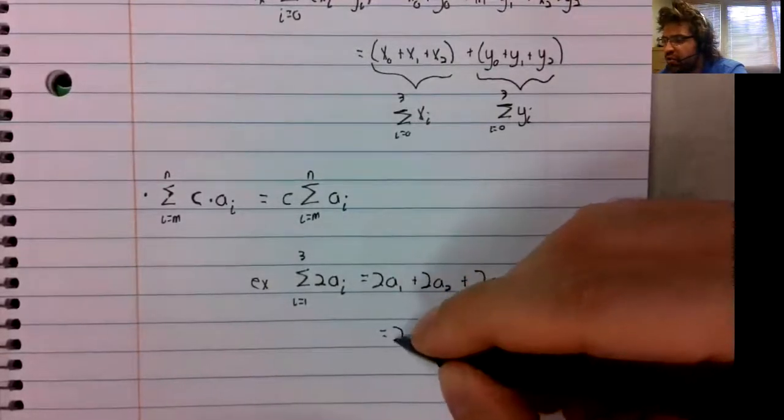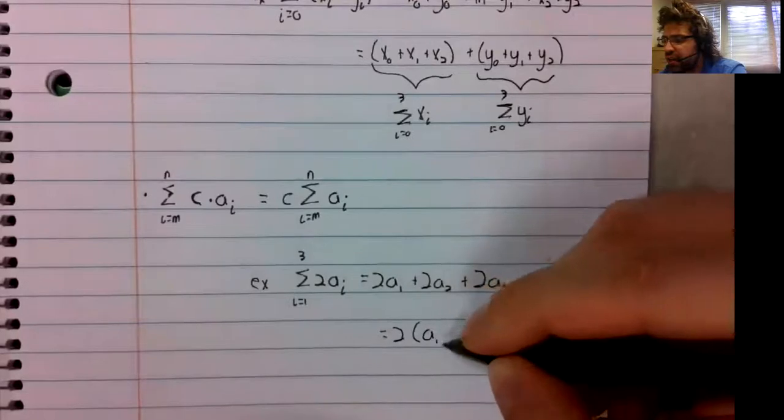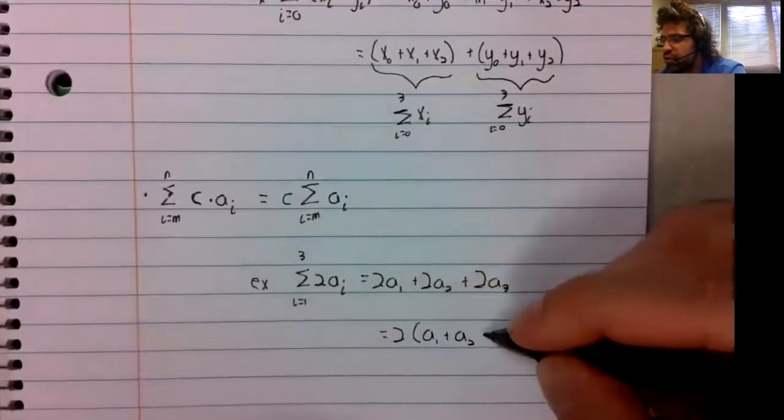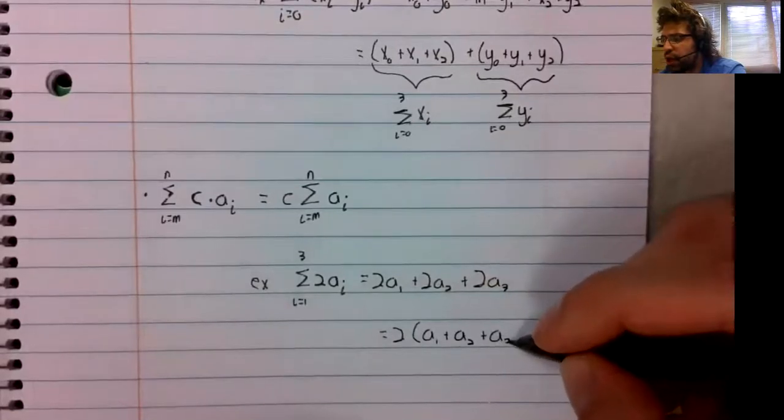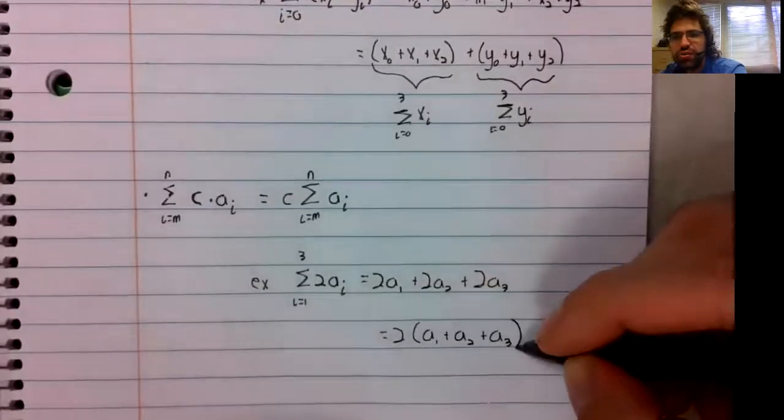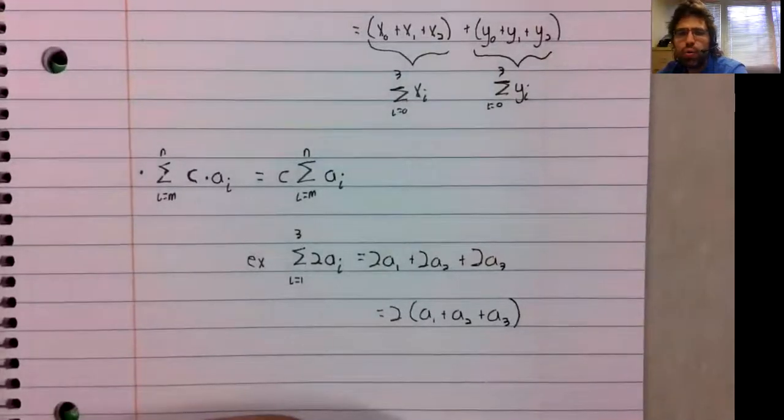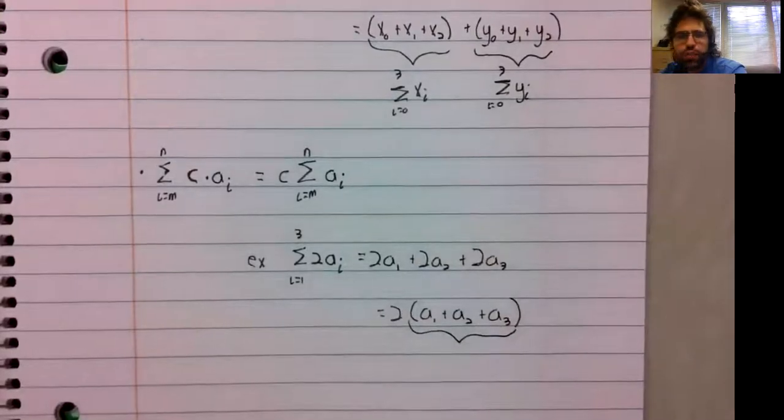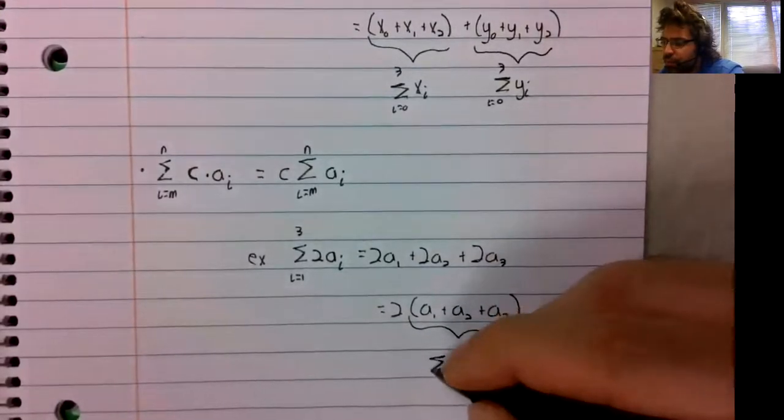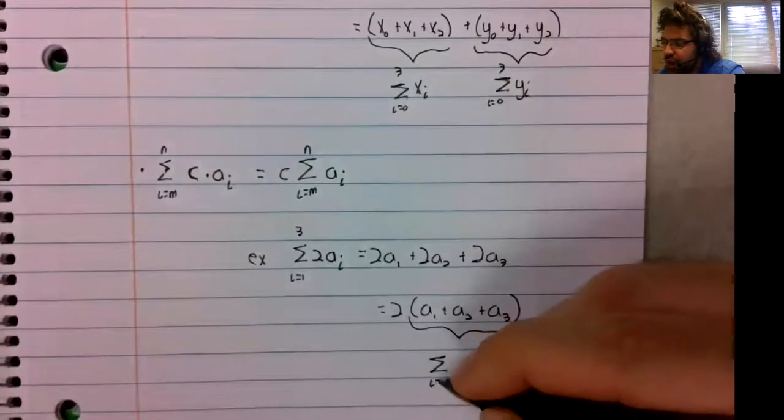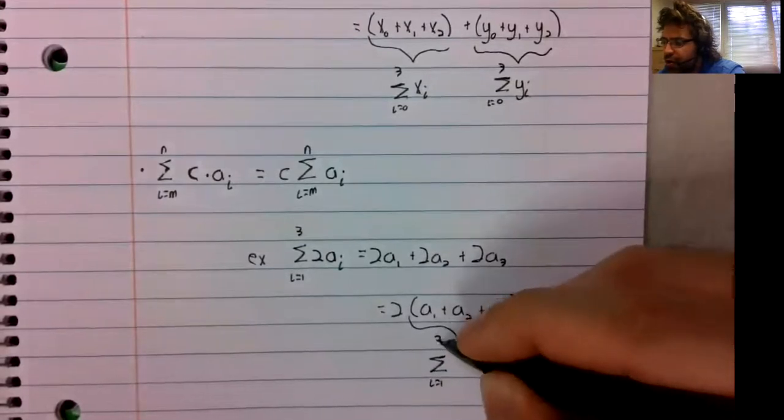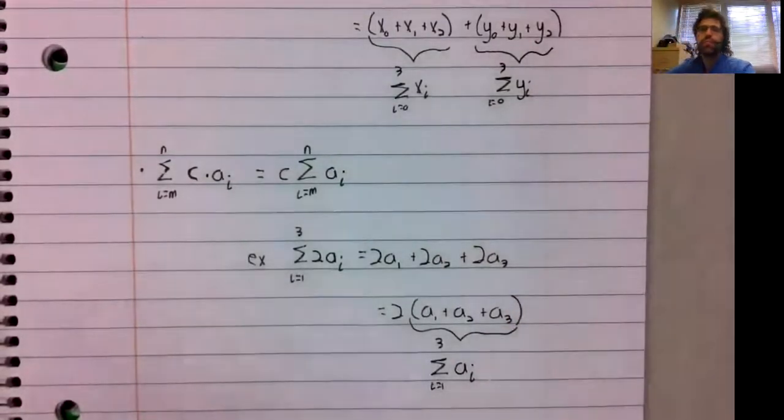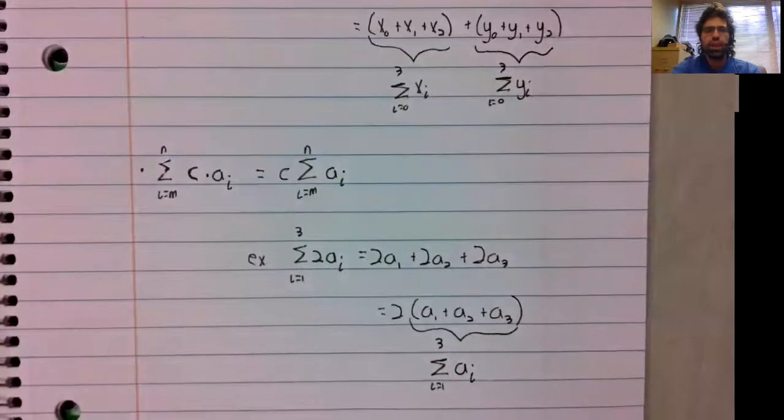And all this property is saying is that if you've got these twos, you can pull two out. And what remains is a sum. It's the sum from i equals one to three of a sub i.